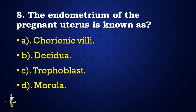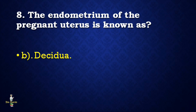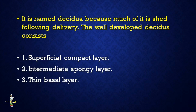Next question: The endometrium of the pregnant uterus is known as — chorionic villi, decidua, trophoblast, or morula? Correct answer is decidua. It is named decidua because much of it is shed following delivery. The well-developed decidua consists of a superficial compact layer, intermediate spongy layer, and thin basal layer.